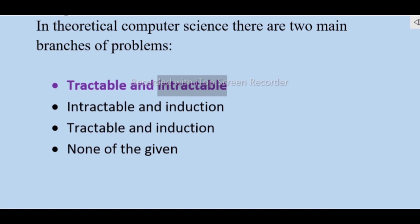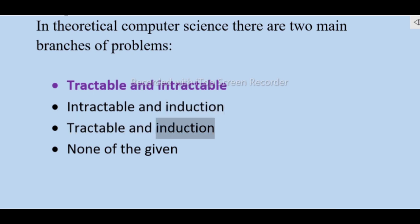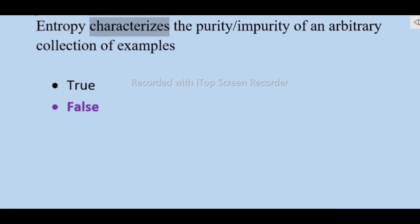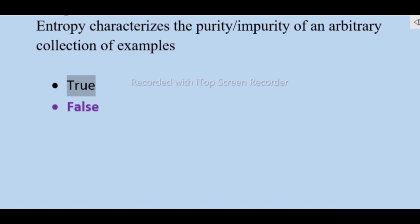In theoretical computer science there are two main branches of problems: tractable and intractable — not induction. Complex problems usually have well-defined steps — true or false — false. Entropy characterizes the purity/impurity of an arbitrary collection of examples — true or false — true.